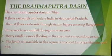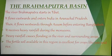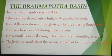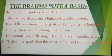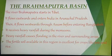The river Brahmaputra starts in Tibet, flows eastwards, and enters India in Arunachal Pradesh. Then it flows westwards towards Assam before entering Bangladesh. It receives heavy rainfall during the monsoons, as the monsoon winds begin from the eastern parts of India, so most of the rainfall is received by this region. Every monsoon causes flooding in the river and surrounding areas. Wherever there is a perennial river, fertile soil is available, and this region grows crops like jute and rice.